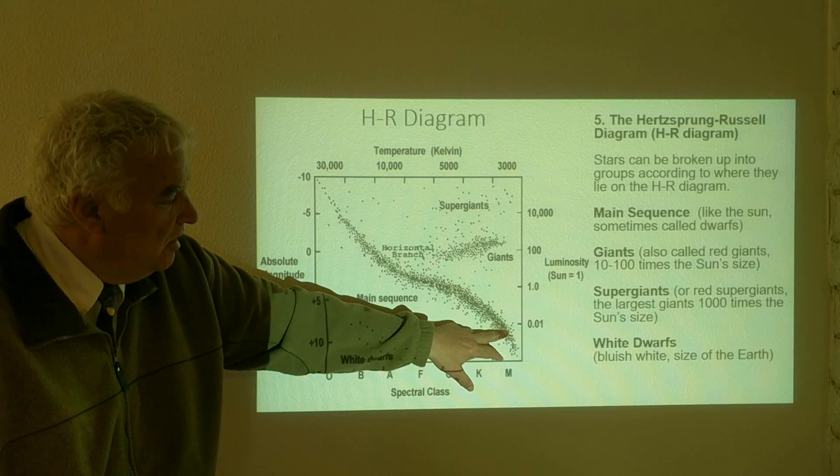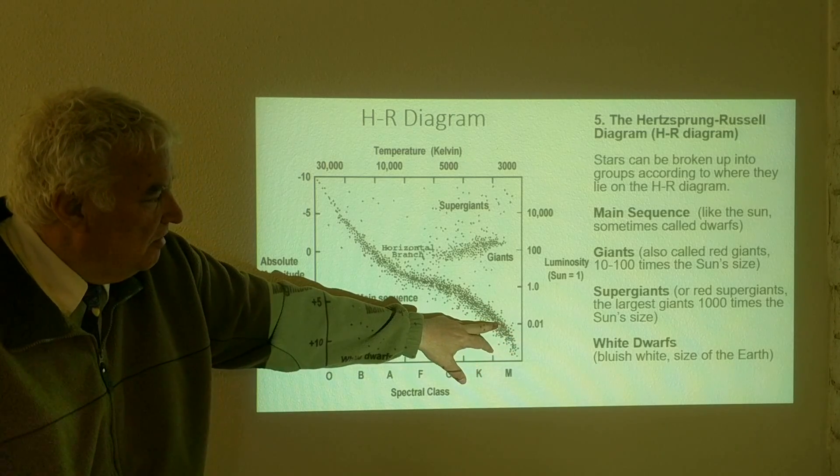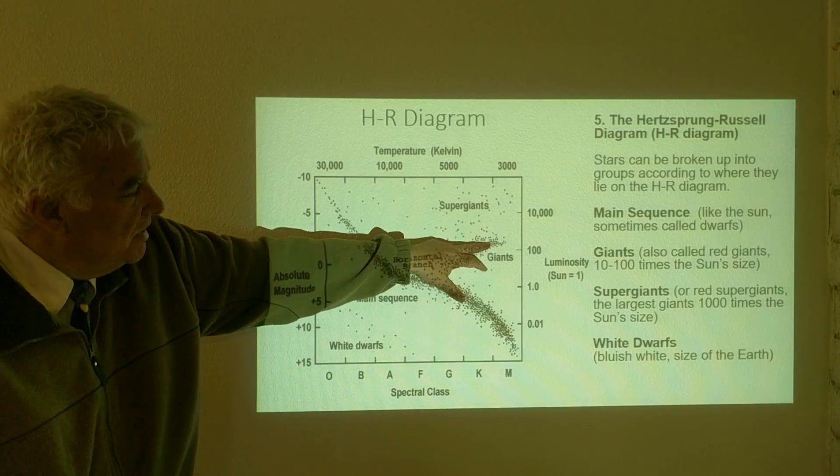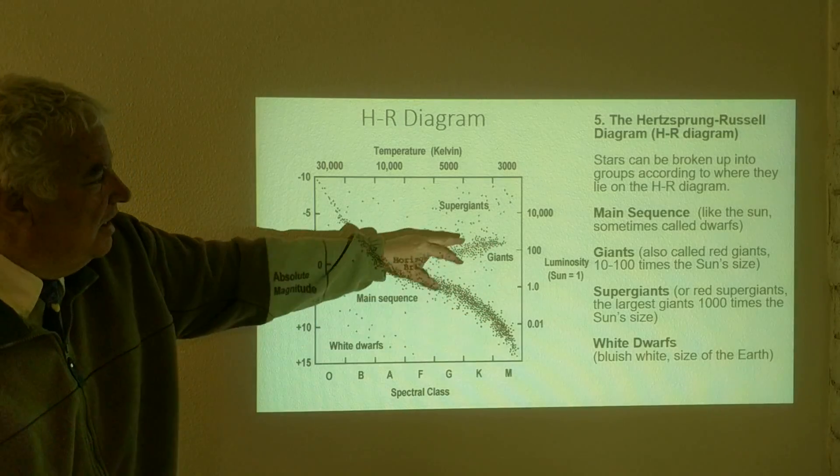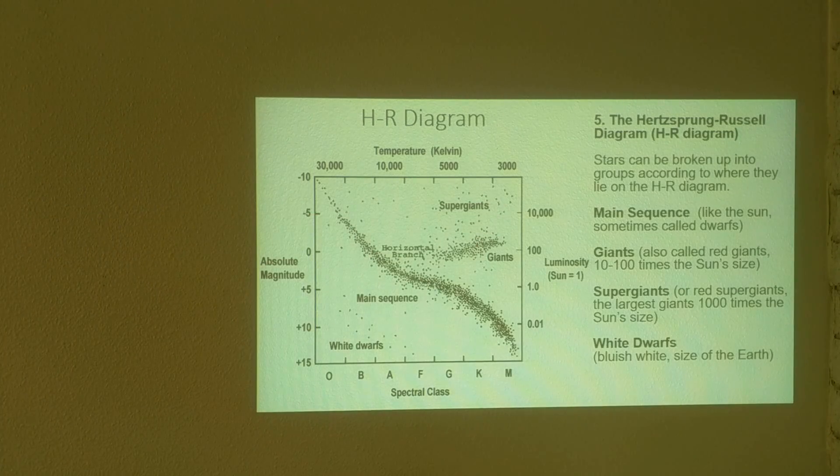We can see these red dwarfs are only emitting one percent of the light of the sun, luminosity of the sun. Whereas these giants are a hundred times the luminosity of the sun and the supergiants up to 10,000 times the luminosity of the sun. So we can see that size is something we can learn right away from the HR diagram.